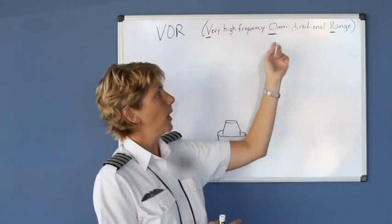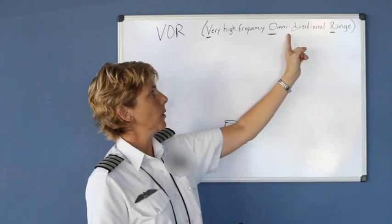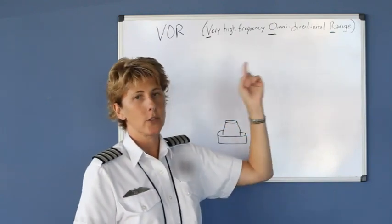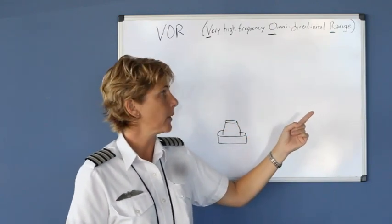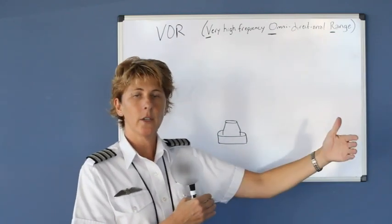And then Omni Directional, Omni meaning multiple or many. So Omni Directional means that it will produce a signal in all directions, 360 degrees matter of fact. And range, it has a limit to it. It can only go just so far.